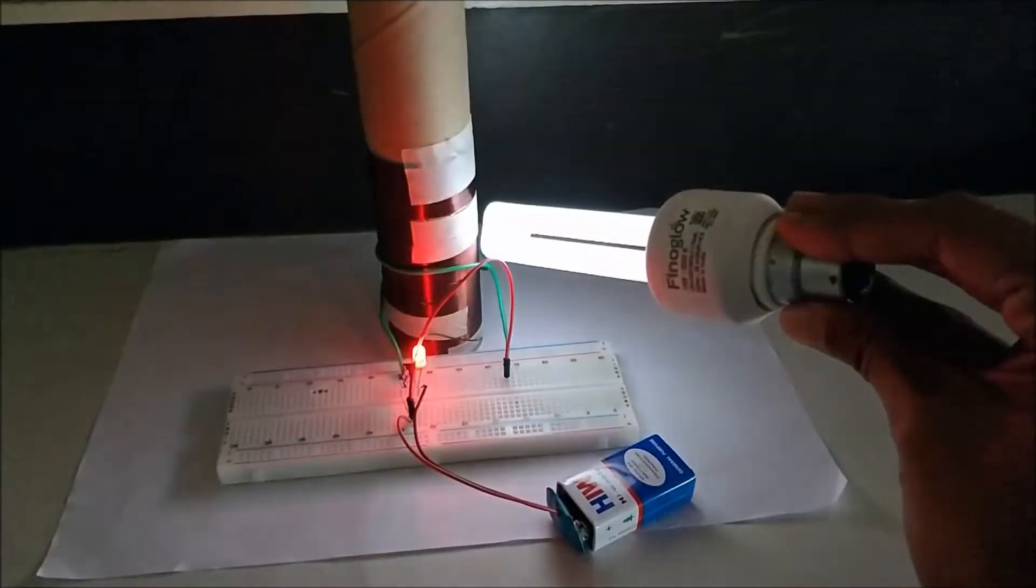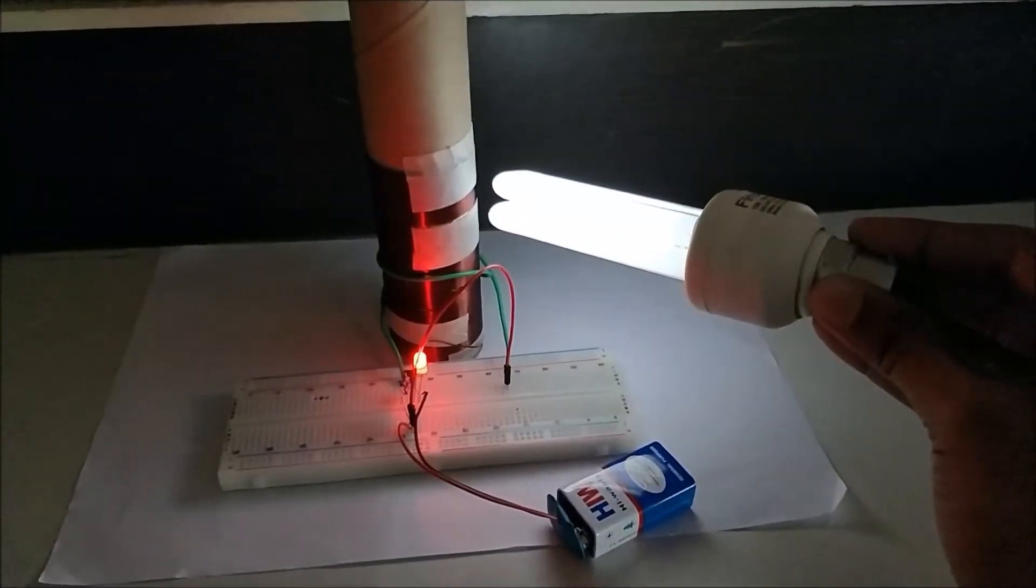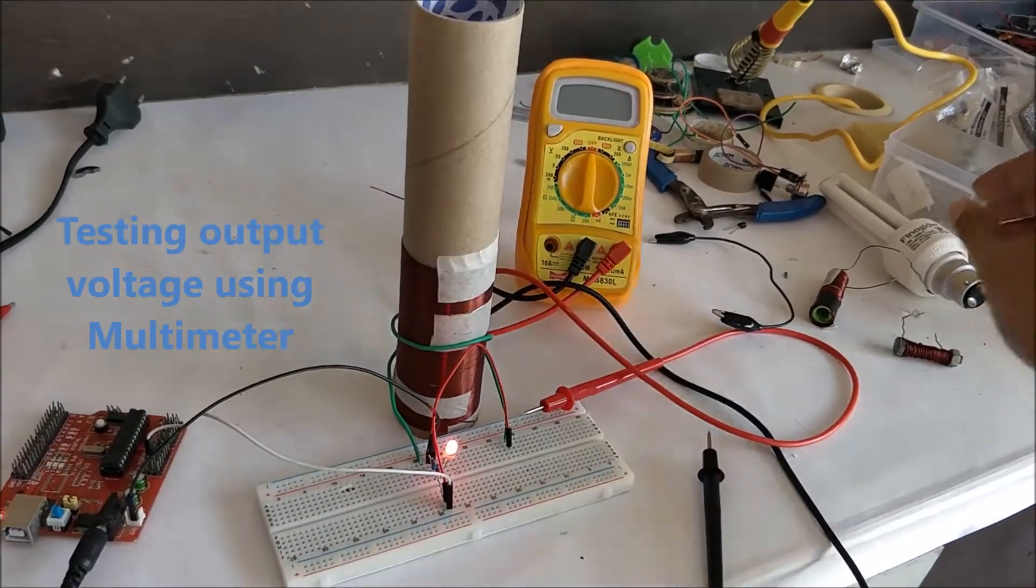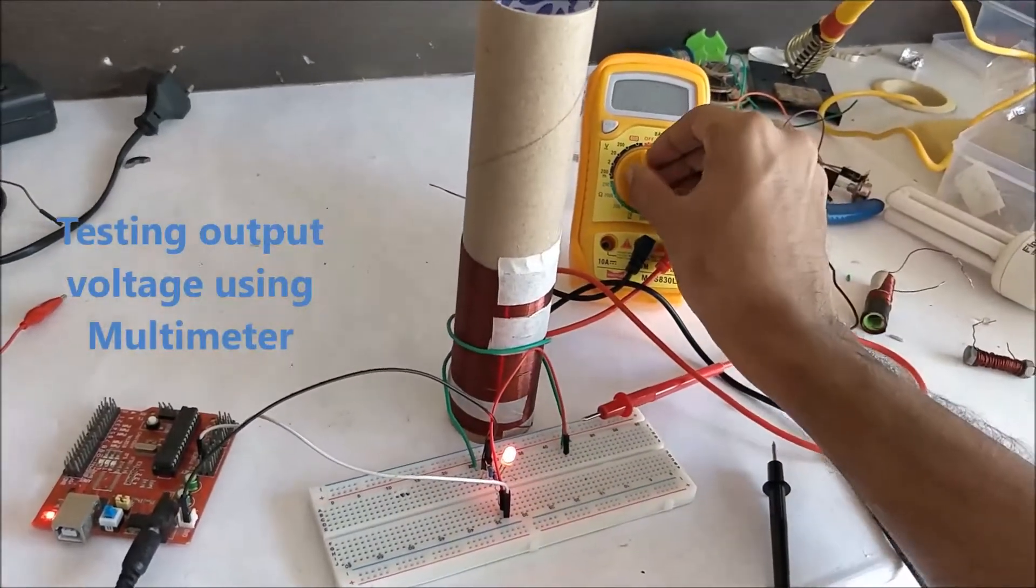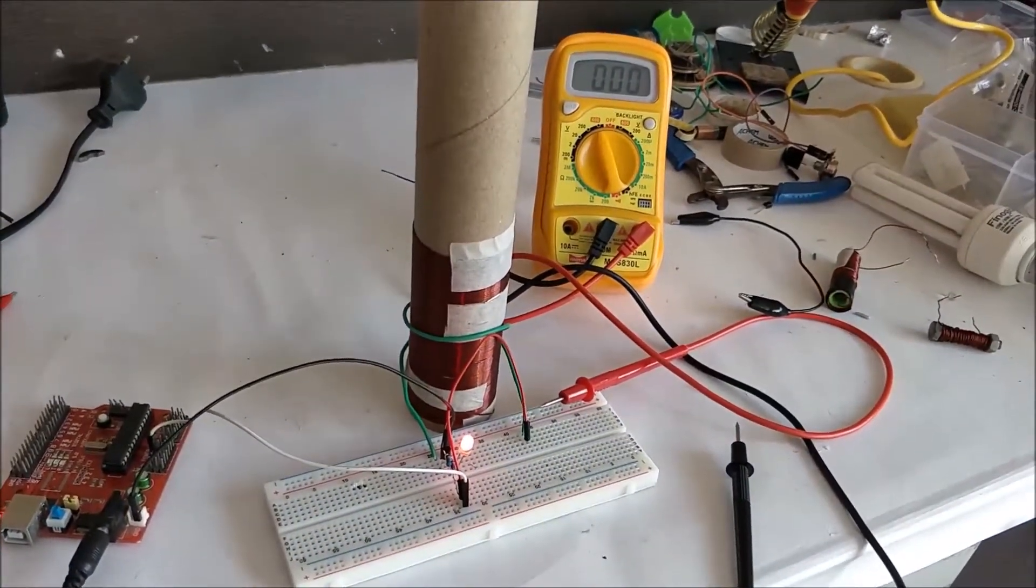If you don't have a CFL bulb, you can use a multimeter. Let me show you how you can use a multimeter to check if the circuit is working properly. When the CFL is glowing, what actually happens is the secondary coil produces a very high voltage.